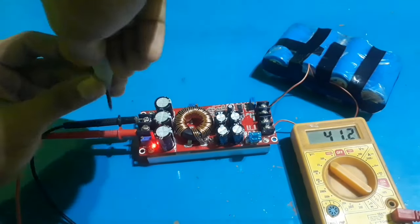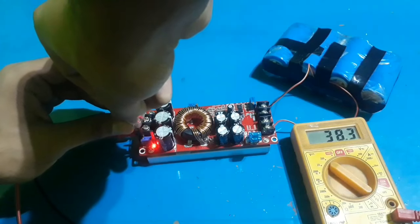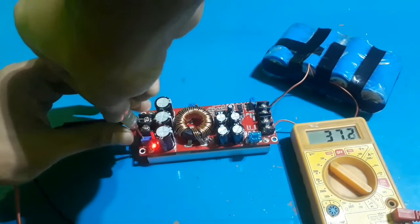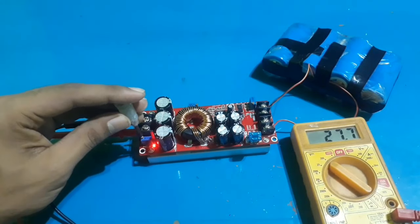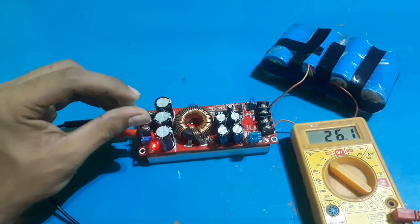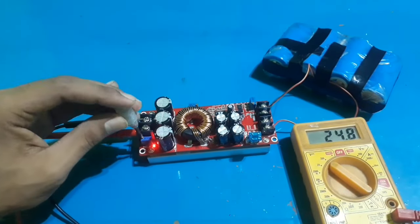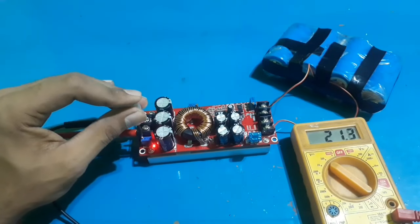After some rotation, the voltage boosted to 32 volts. Now I'm rotating the potentiometer anti-clockwise and you can see the voltage is decreasing. Now I'll keep the voltage constant at 20 volts.